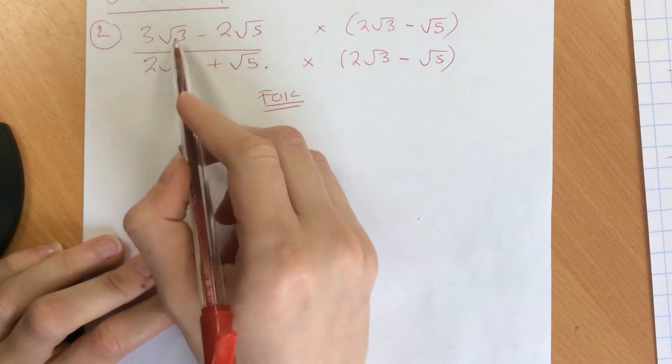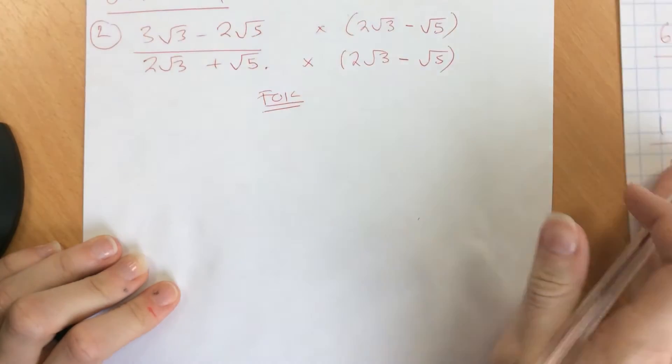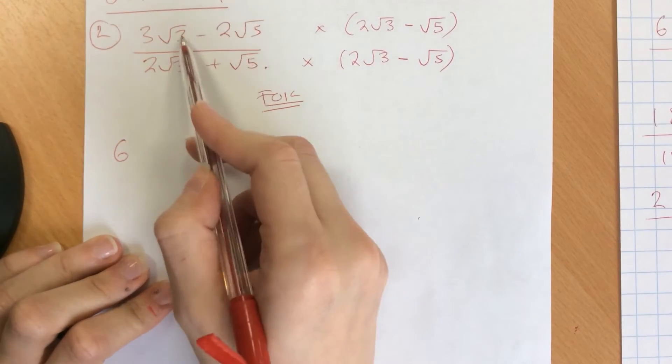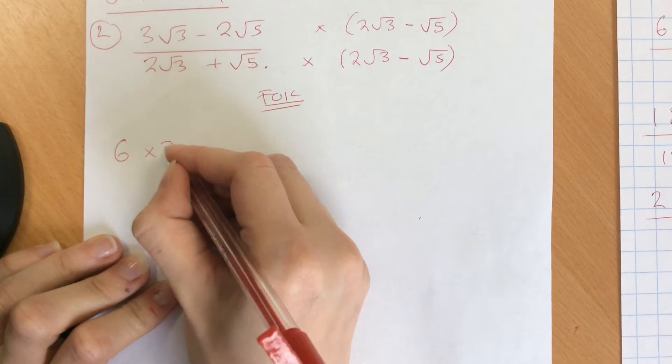So starting with the top, we're going to do first, we have 3 root 3 times by 2 root 3. So 3 times 2 will give us 6. Root 3 times by root 3 just gives us 3.